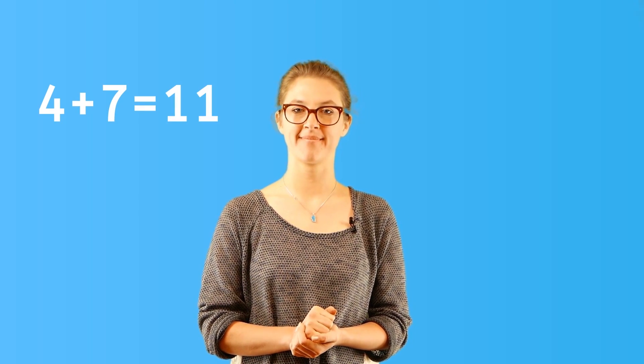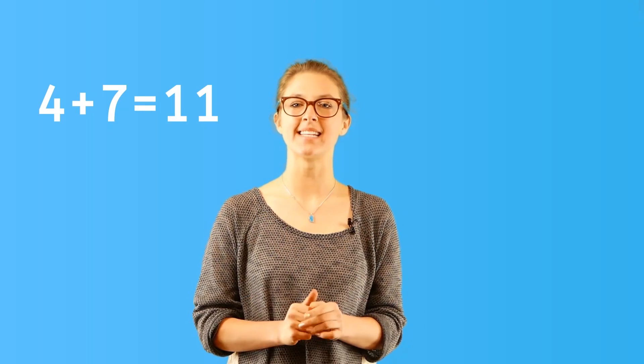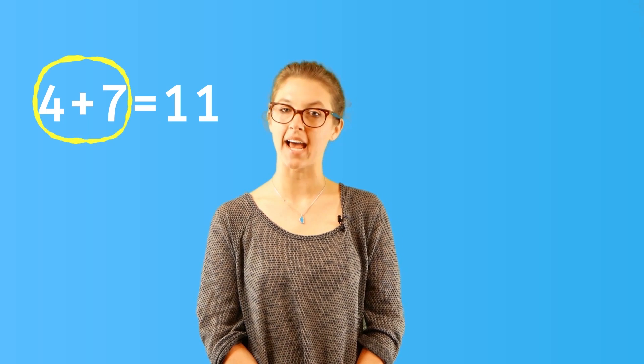For example, 4 plus 7 equals 11. This is a true number sentence because what is on one side of the equal sign is the same or equal to what is on the other side.